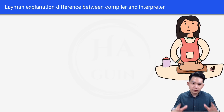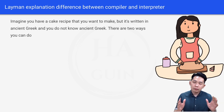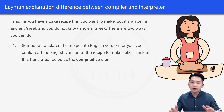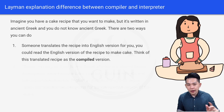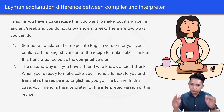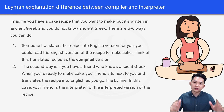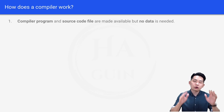Before we dive into compiler and interpreter, here's a layman explanation of the difference. Imagine you have a cake recipe written in ancient Greek and you don't know ancient Greek. The first method is to have someone translate the entire recipe into English for you, so you can read the English version to make the cake — think of this translated recipe as the compiled version. The second way is if you have a friend who knows ancient Greek: when you're ready to make the cake, your friend sits next to you and translates the recipe line by line as you go — your friend is the interpreter. Always think of this example when you forget the difference between compiler and interpreter.